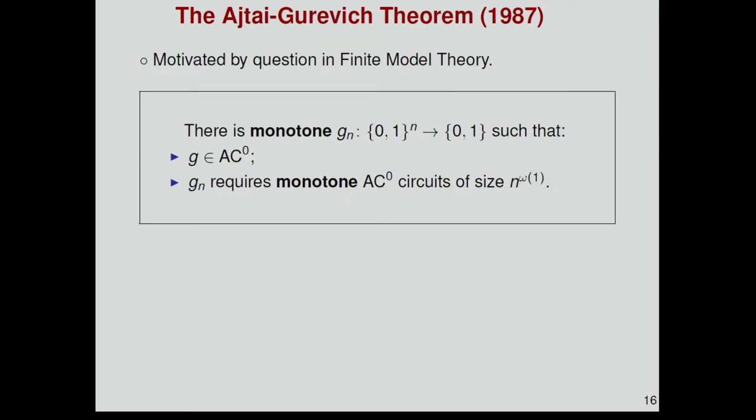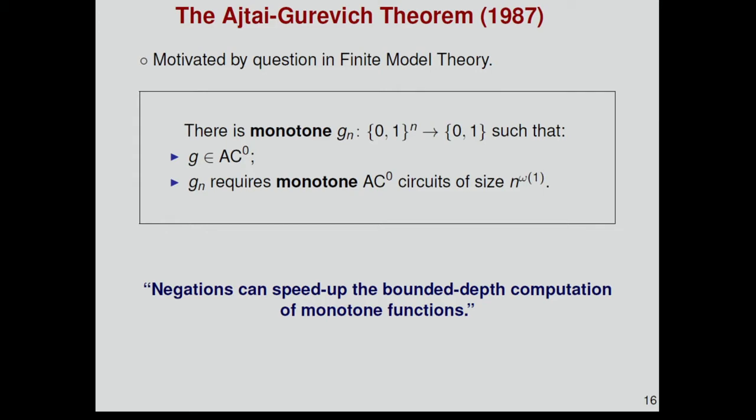Immerman, Tardos, and Gurevich in 87 were interested in this kind of question motivated by something in finite model theory. They established the following stronger result. They proved that there exists a monotone function G from n bits to a bit, such that this function is in AC0. We have very shallow and polynomial-sized circuits for it. But if you force these AC0 circuits to be monotone, then you need super-polynomial size. Intuitively, this means that negations can speed up the bounded-depth computation of monotone functions.